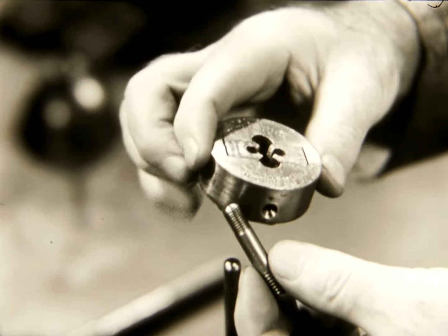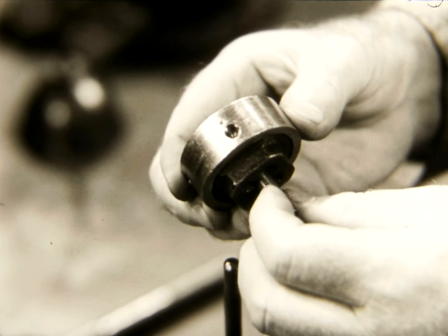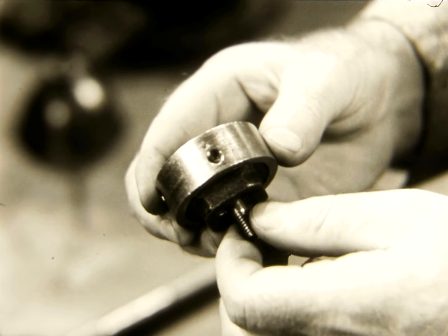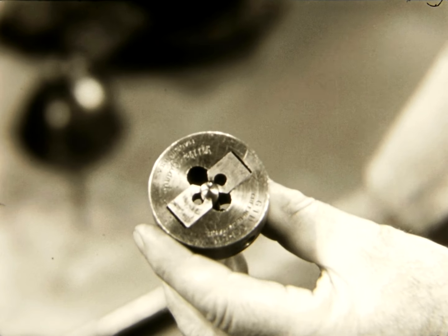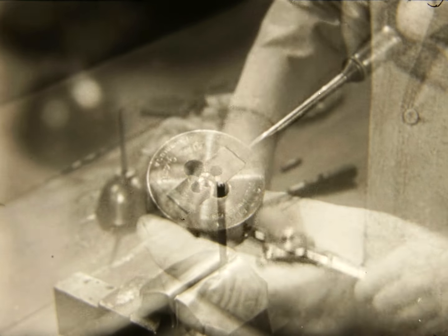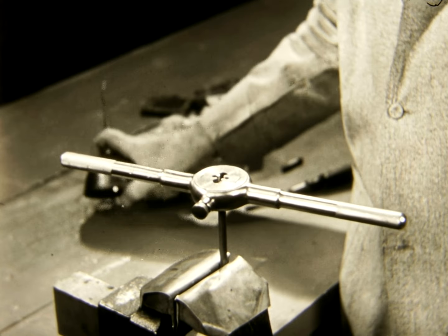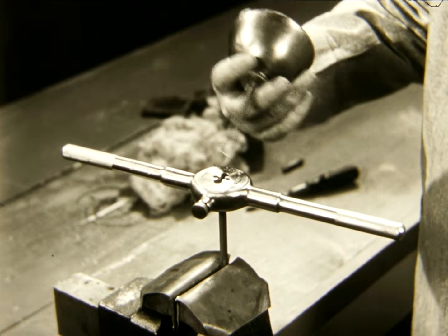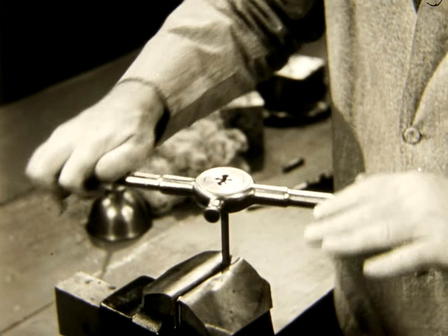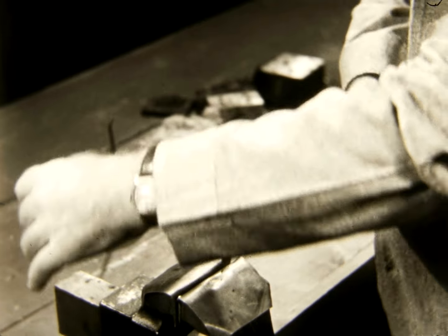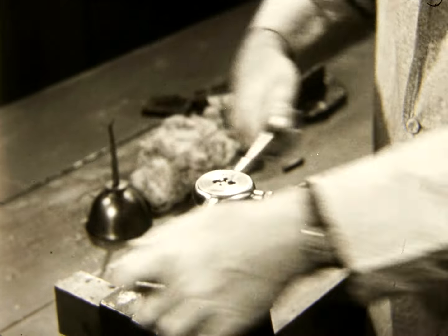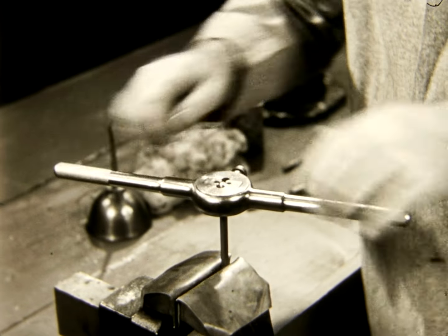The first step in cutting an external thread is to adjust the jaws of the die for a trial cut. The approximate size can be secured by trying a threaded bolt of the same size and thread, being careful not to set the jaws too close together, since a cut too deep will ruin the work. Since the guide collar keeps the work straight, we need not check the straightness. As soon as a trial cut is made, the die is backed off the stud.